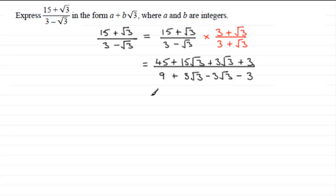So we just need to simplify this. If we group up the constants, 45 plus 3 that's 48, and then the √3 terms you've got 15√3 plus 3√3 which is a total of 18√3, and all this is divided by, on the bottom here 3√3 minus 3√3.